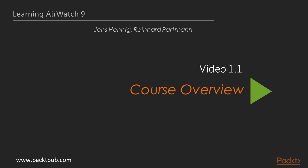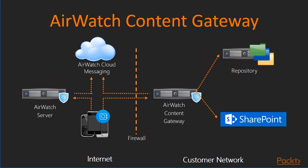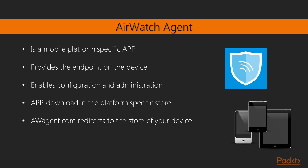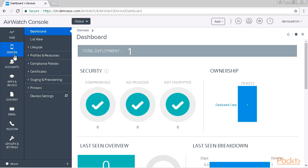Now we will give you a course overview. Starting with Section 1, we will give you an AirWatch architecture overview. Within Section 2, you will get information about AirWatch applications. Followed by Section 3, we will show you the initial configuration of an AirWatch installation.